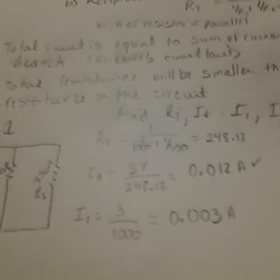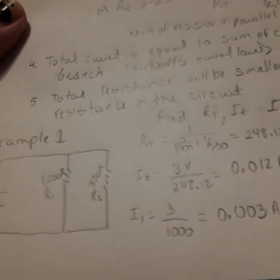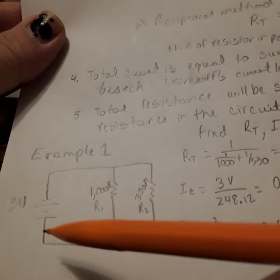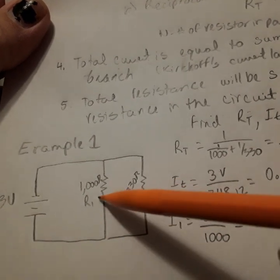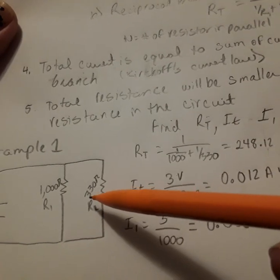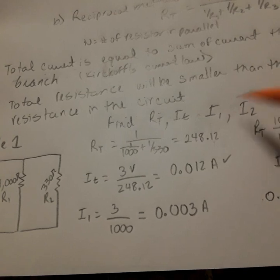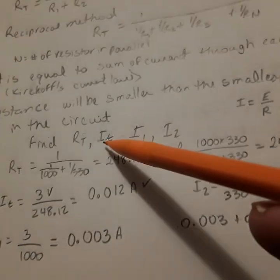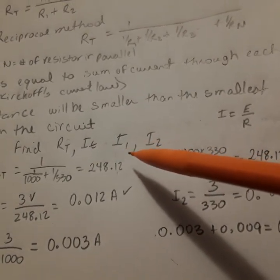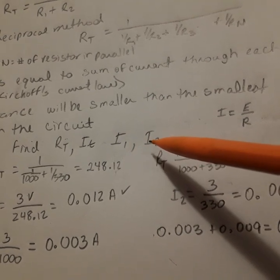Total resistance in the circuit will be smaller than the smallest resistance in the circuit. Now, I got two examples. Let's look at the first example. We have a voltage source of 3 volts, a resistor of 1000 ohms, and a resistor of 330 ohms. We're going to find the total resistance, the total current, and the current through I1 and I2.